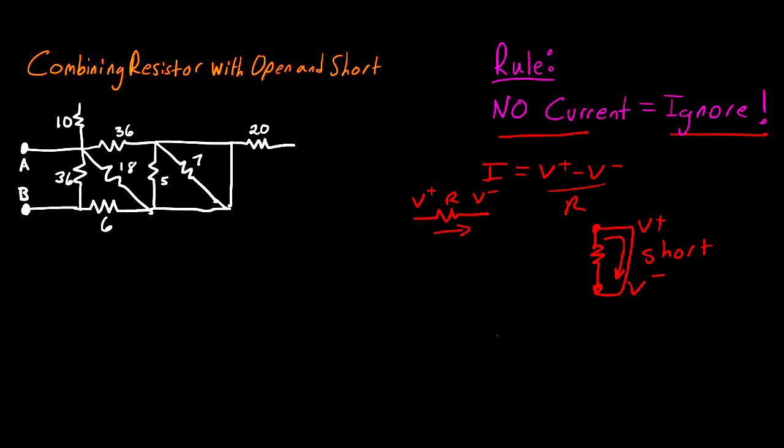In the case of an open, there's no current flowing through the resistor because there's nowhere to go on the other side. One way you could think about it is if you had a voltage source and a resistor and nothing was connected to the other side. If you were to do a KCL here, there's no current coming out of your circuit.